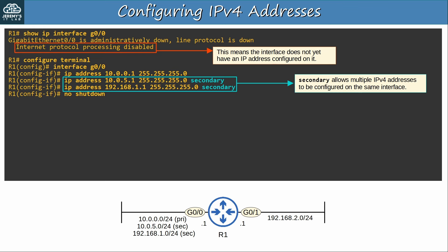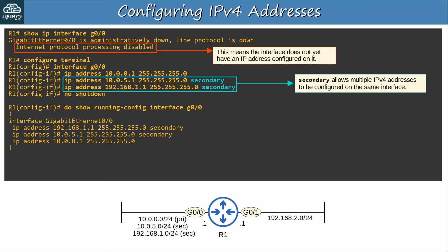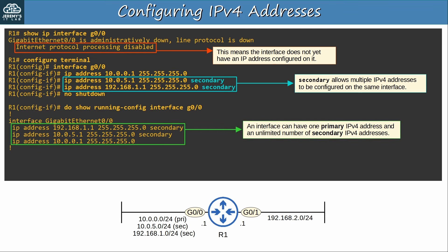There are a few use cases for secondary IP addresses — for example, if you are migrating from one subnet to another. You can use secondary IP addresses to temporarily allow the router to support both the old and new subnets, and then remove the old IP address after all end hosts have been moved to the new subnet. The exact use cases are not really relevant to ENCOR. Notably, an interface can have only one primary IPv4 address, but it can have an unlimited number of secondary IPv4 addresses. I will include more information about secondary IP addresses when we cover routing protocols in the course.